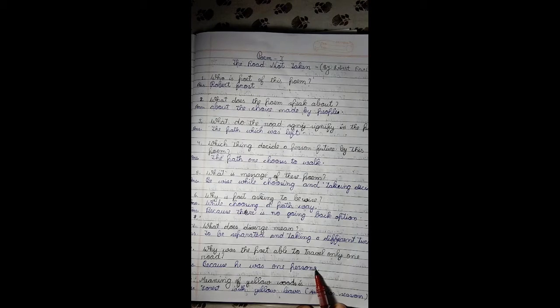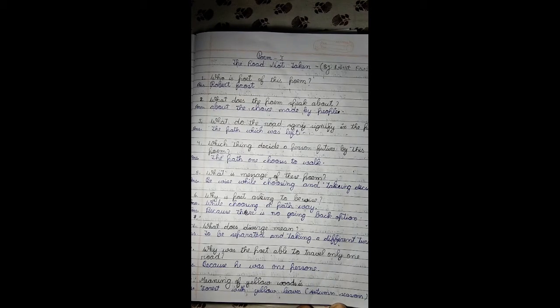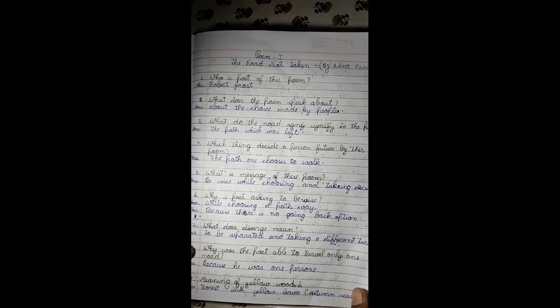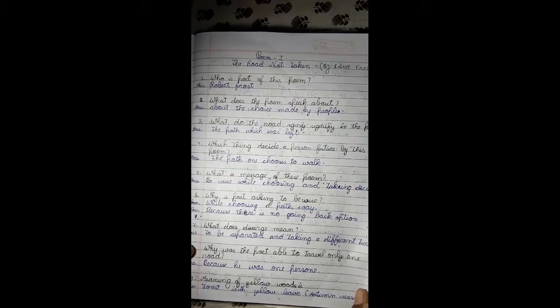Meaning of yellow wood: yellow wood stands for the yellowish leaves which generally fall from the trees during the autumn season. In the autumn season, generally the jungle appears yellowish in color.